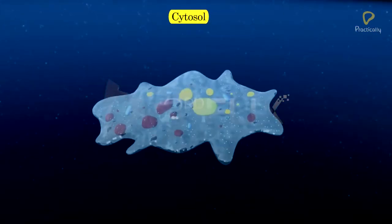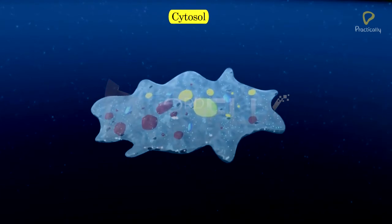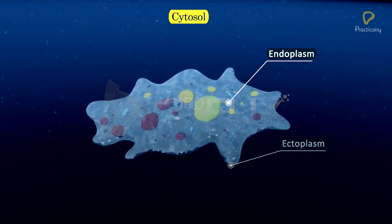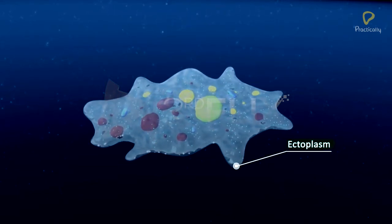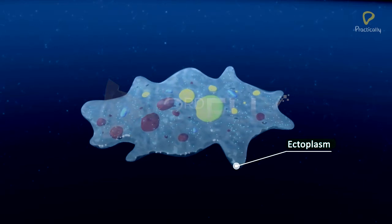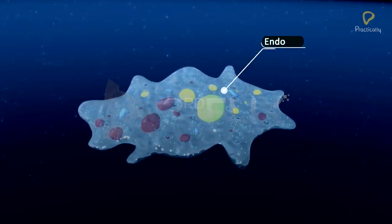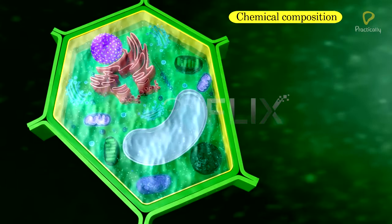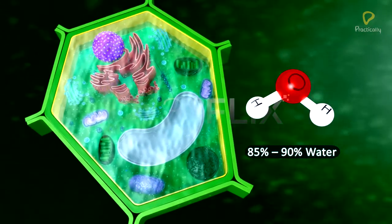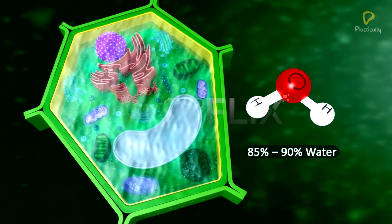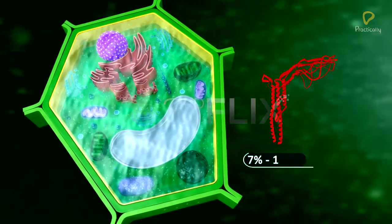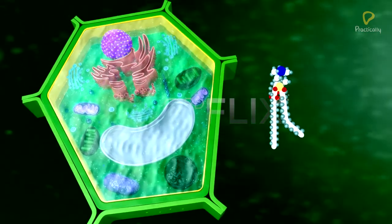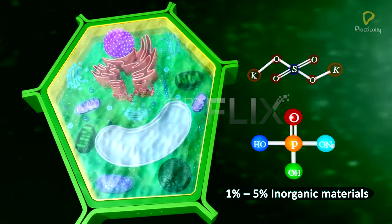Cytosol. In many cells, the cytosol is differentiated into peripheral ectoplasm and inner endoplasm. Ectoplasm is relatively non-granular, viscous, and clear. Endoplasm is granular and less viscous. The chemical composition of cytoplasm is 85% to 90% water, 7% to 10% proteins, 1% to 2% lipids, and 1% to 5% inorganic materials.